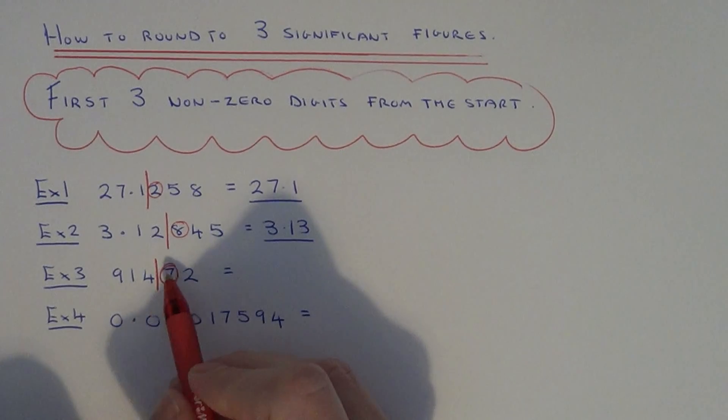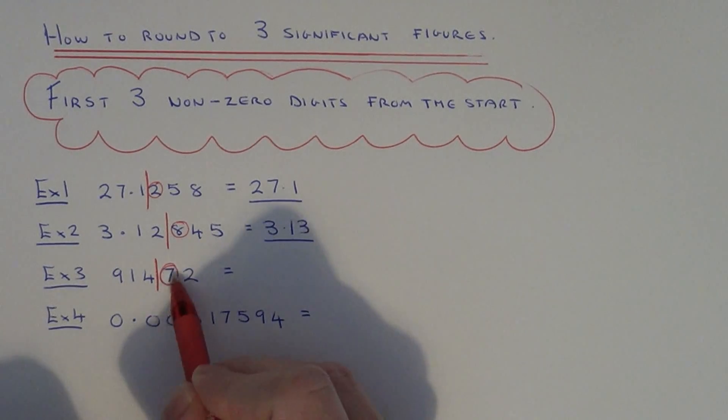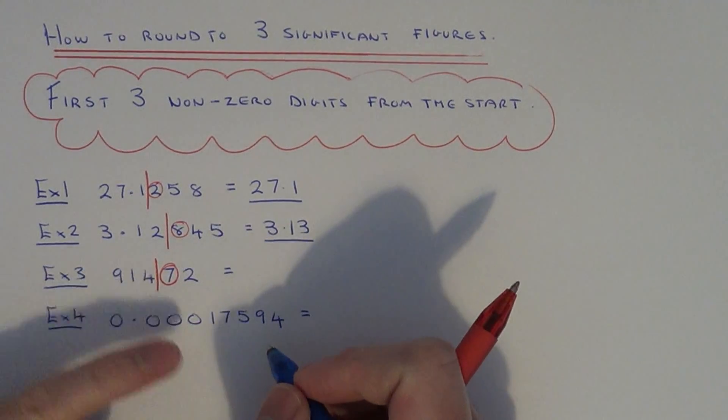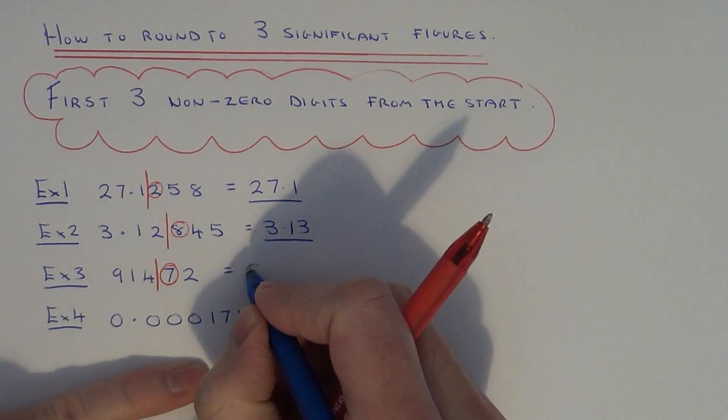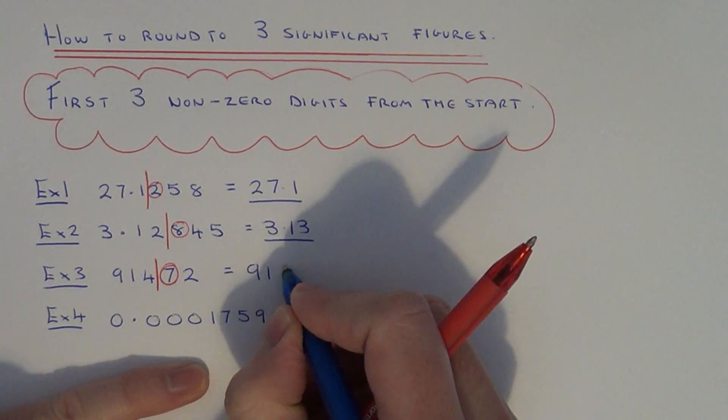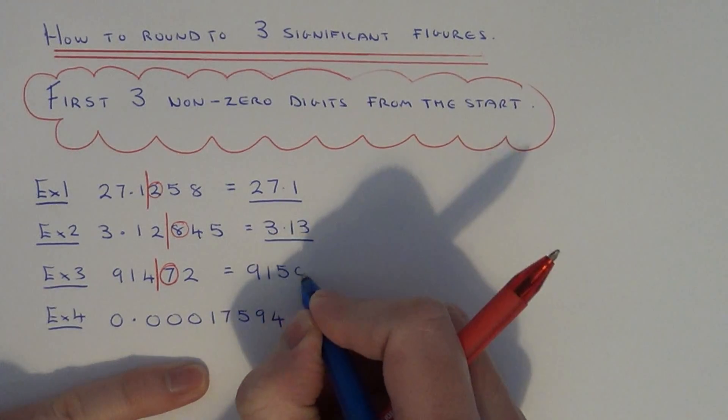Since the number after the line is a seven, and seven is five or above, this number is closer to 91,500.